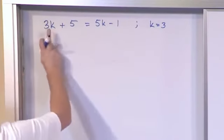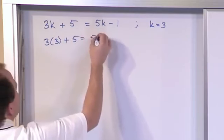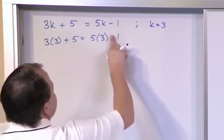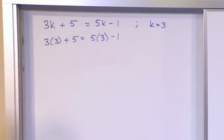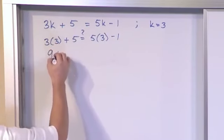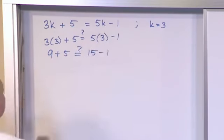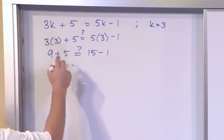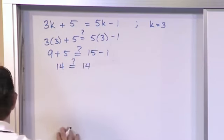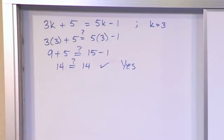So let's stick k is equal to 3 in here. So we'll have 3 times 3 plus 5 is equal to 5 times k, which is 3, and that's equal to, I should say there's a minus sign here, minus 1. And we're asking ourselves, are these equal? So we have to do the multiplication first. 3 times 3 is 9. We still have to add the 5, we'll do that later. 5 times 3 is 15, so we leave that like this. 9 plus 5 is 14, and 15 minus 1 is 14. So yes, this is correct. k is equal to 3 is the solution to this equation.